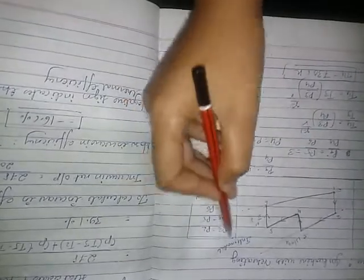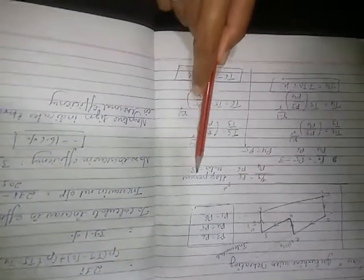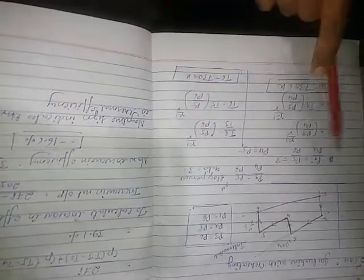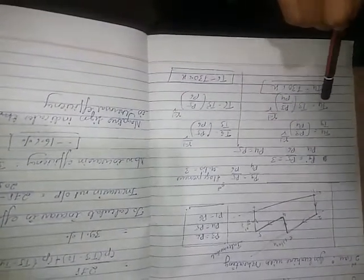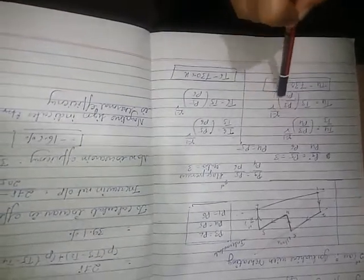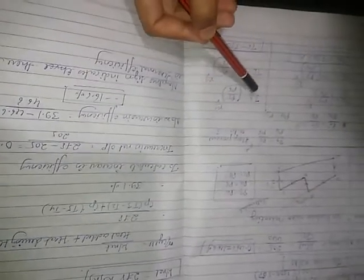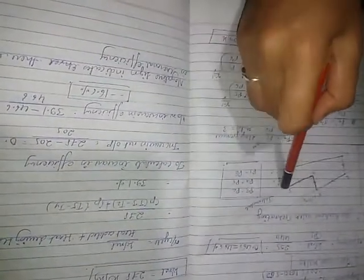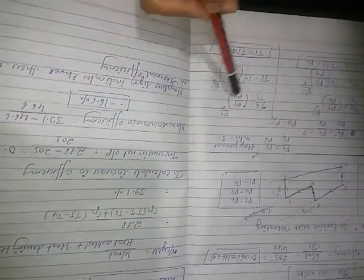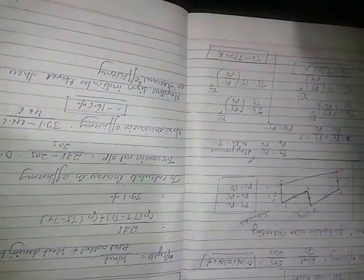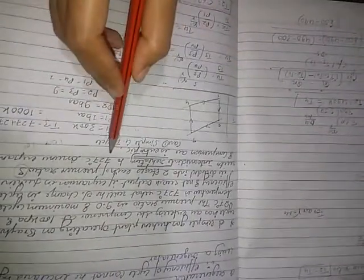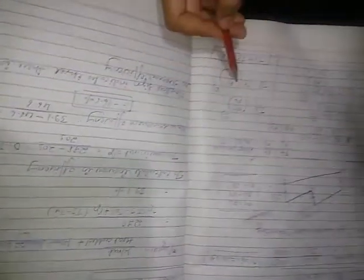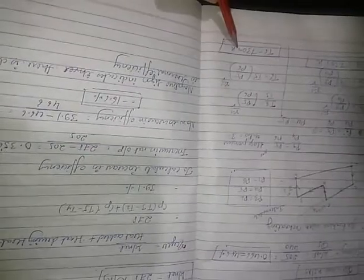From the T-S diagram: P3 = P2, P4 = P5, and P1 = P6. Also, P3/P4 = P5/P6 = 3 (given pressure ratio for each stage). Using T4/T3 = (P4/P3)^((γ-1)/γ), with P3/P4 = 3, we calculate T4. Similarly, T6/T5 = (P6/P5)^((γ-1)/γ), with T5 = 1000 K, gives T6 = 730.6 K.